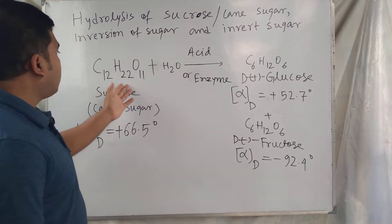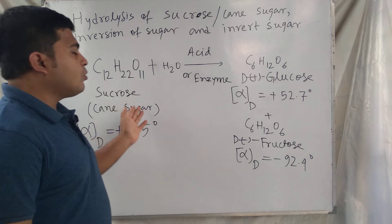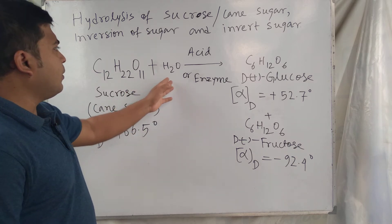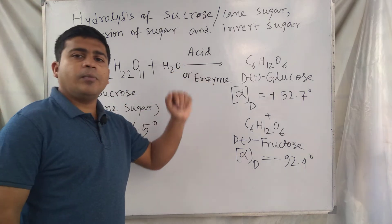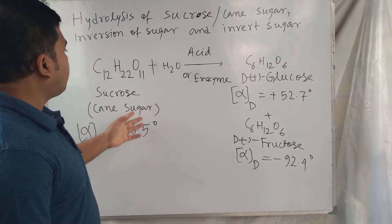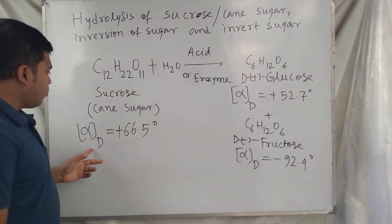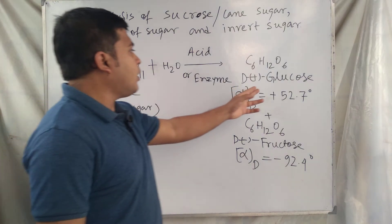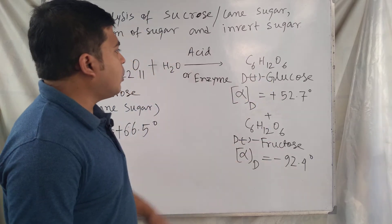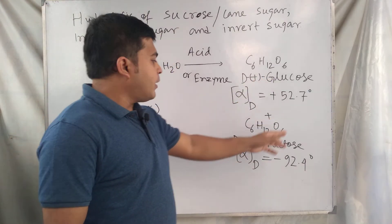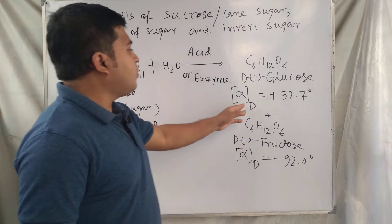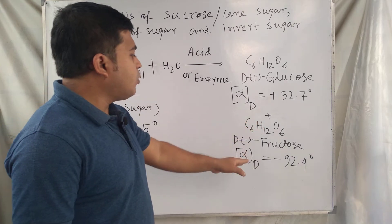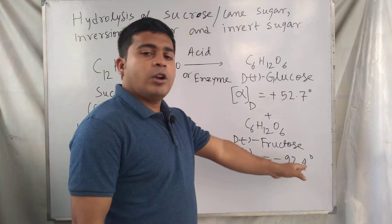Look at this hydrolysis of sucrose — cane sugar, also called table sugar. On hydrolysis, either acid or enzyme catalyzed, sucrose has a specific rotation of +66.5 degrees. On hydrolysis, two products are formed: one is D-plus glucose and another is D-minus fructose. The specific rotation of glucose is +52.7 degrees and the specific rotation of fructose is -92.4 degrees.